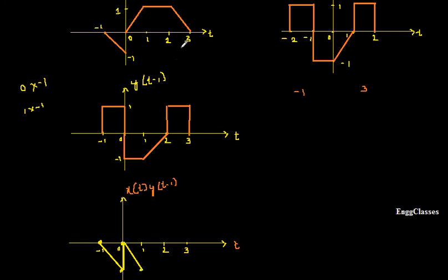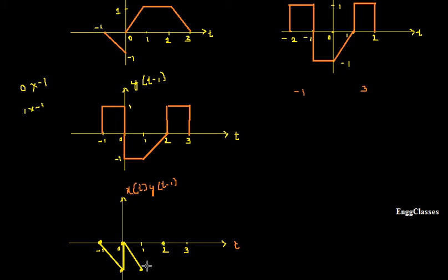Similarly, moving further — at the position t = 2, x(t) amplitude is still 1. At t = 2, y(t-1) has two values: 0 and 1. As I am moving from 1 to 2, at position 2 I take the amplitude of y(t-1) as 0. So x(t) times y(t-1) = 1 times 0 = 0. I mark the point 0 here; previously the point was at minus 1, now it has become 0. I join those two points.